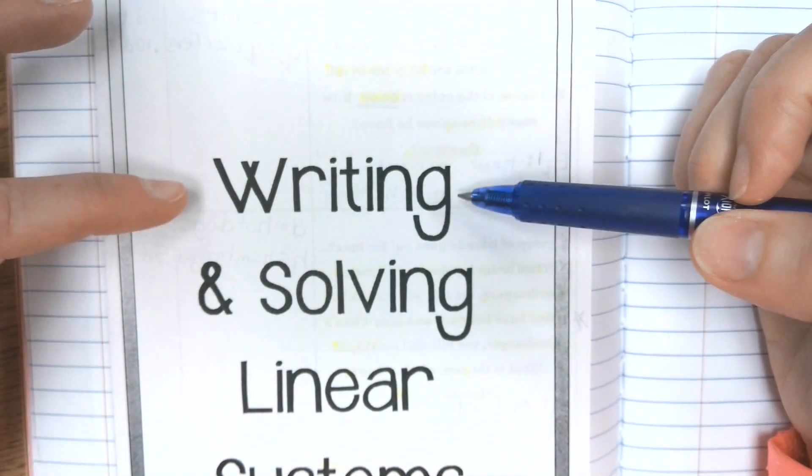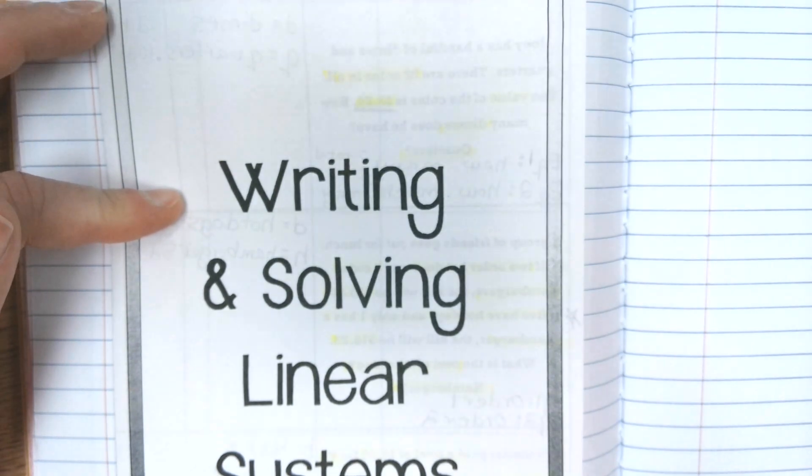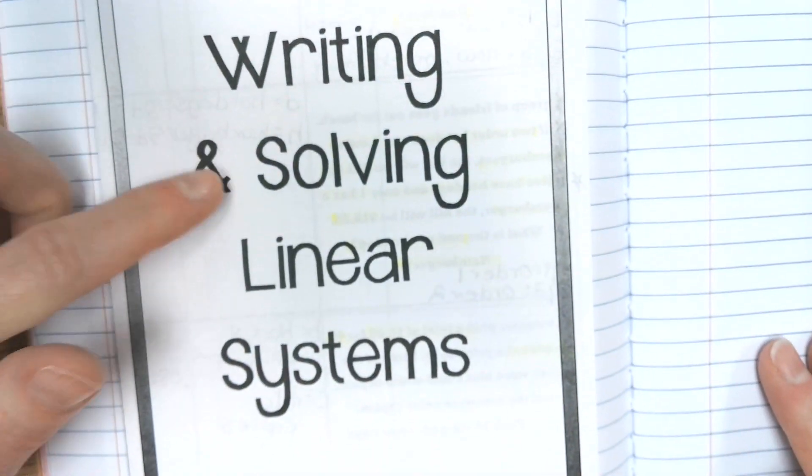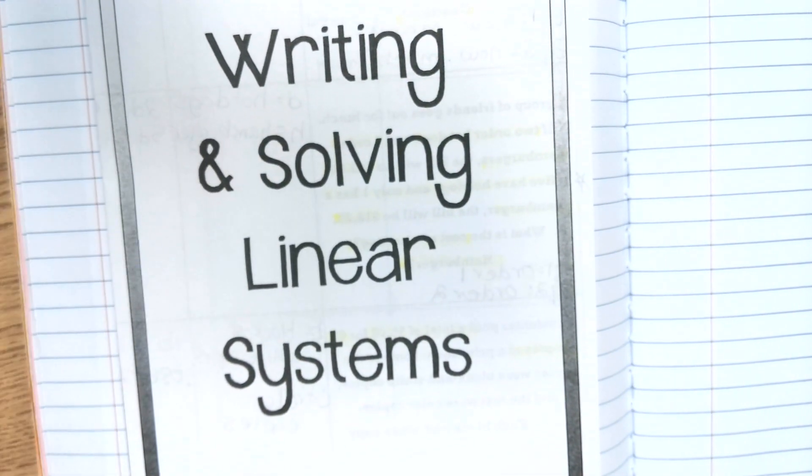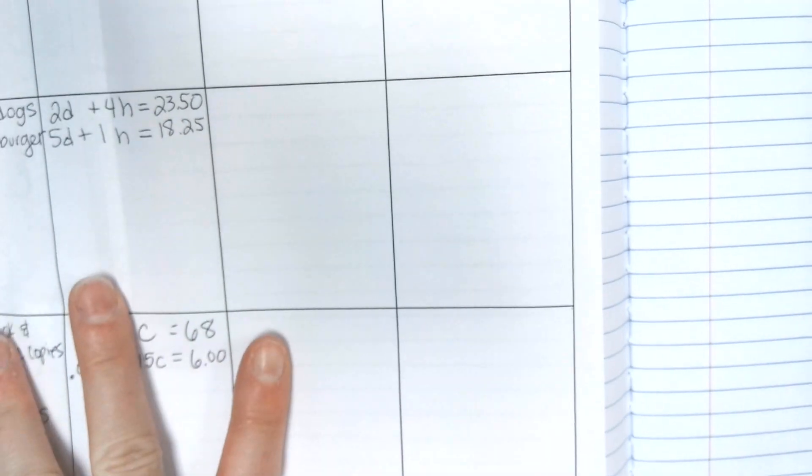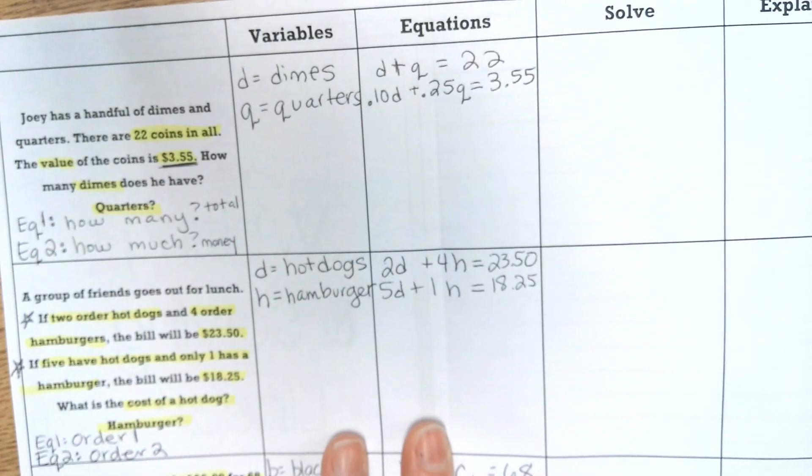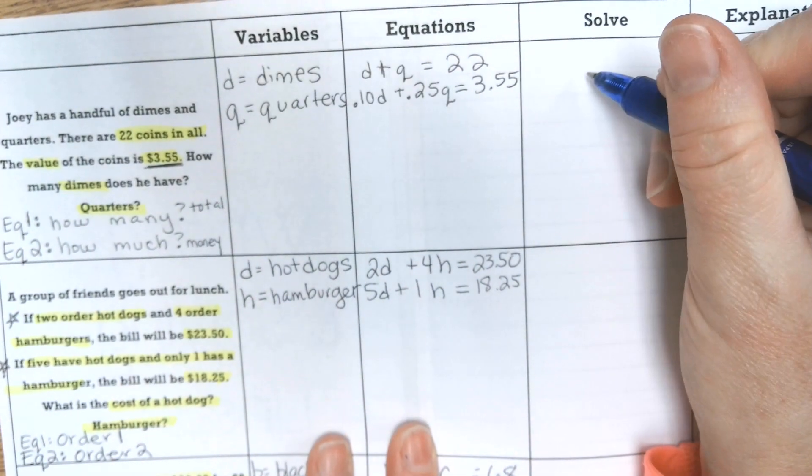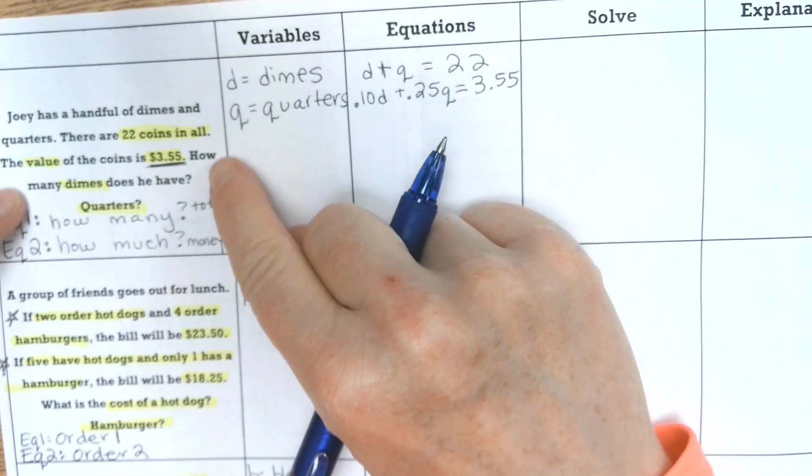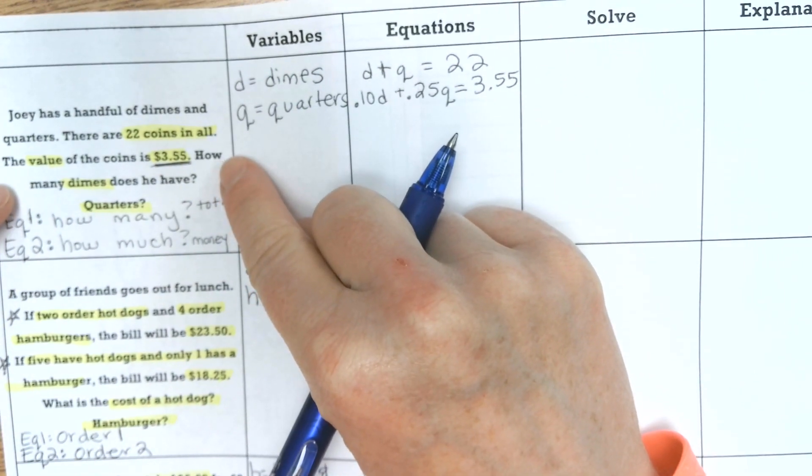So, day one was all about writing the systems. Day two is about solving the systems using methods that we already know. These were the notes from yesterday. What we are going to do is solve because we have to answer the question. How many dimes does he have? How many quarters does he have? He, because it's Joey.